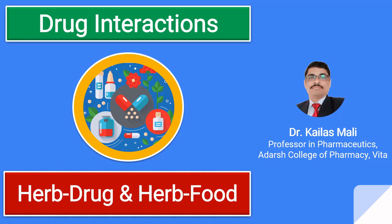The first category is GIT absorption — either it is going to be increased or decreased. The second is related to the liver, already discussed. The third is related to distribution — specifically protein binding. The majority of drugs bind to albumin. If there is any displacement or competition between two drugs towards albumin, that may lead to a rise in plasma concentration of the drug, leading to toxicities. For example, phenylbutazone and warfarin: phenylbutazone has the highest affinity towards albumin and displaces a small quantity of warfarin, which may lead to bleeding.